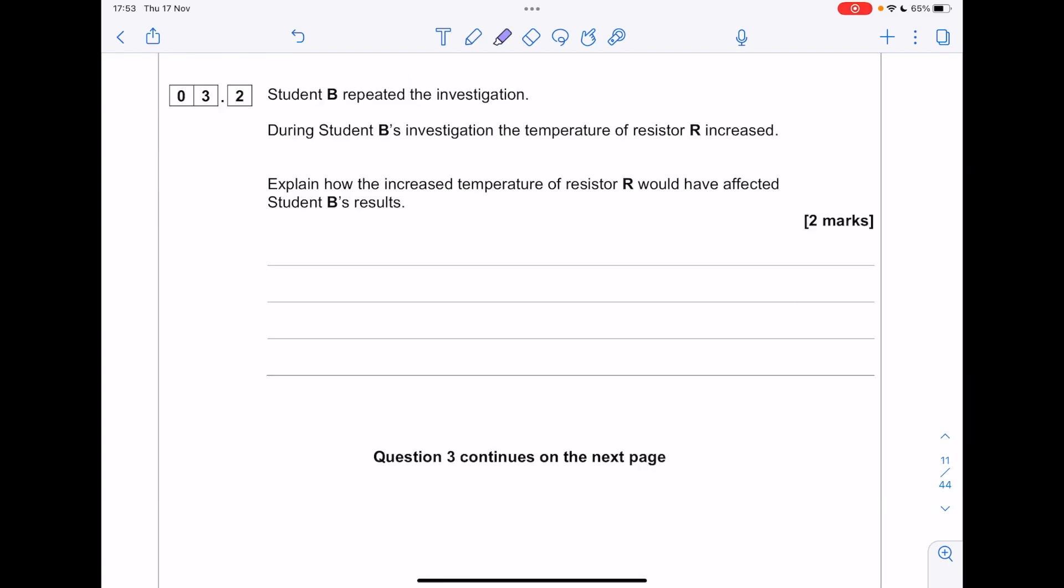Student B repeated the investigation. During student B's investigation, the temperature of resistor R increased. Explain how the increased temperature would have affected student B's results. When you increase the temperature, you increase the resistance because those positive metal ions vibrate more. That means that the current and the potential difference would no longer be directly proportional. When you drew that current potential difference graph, it would no longer be straight.